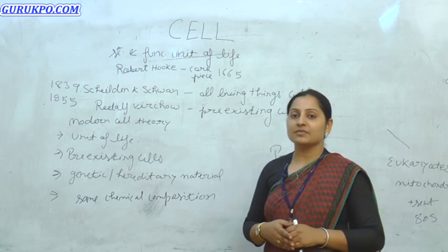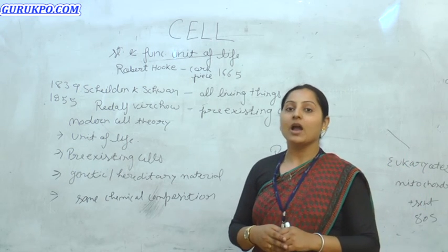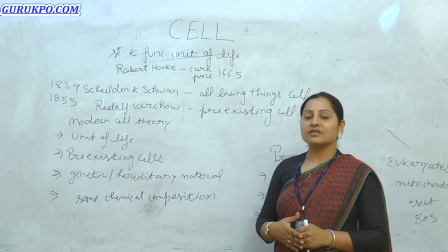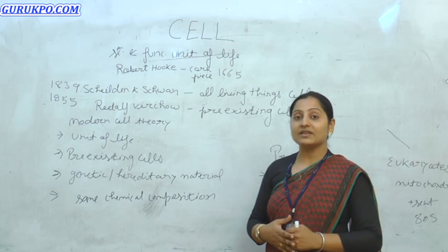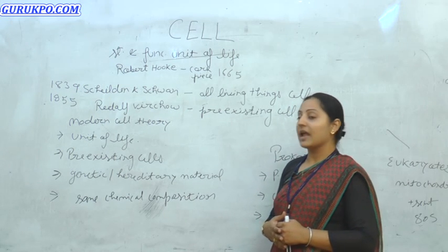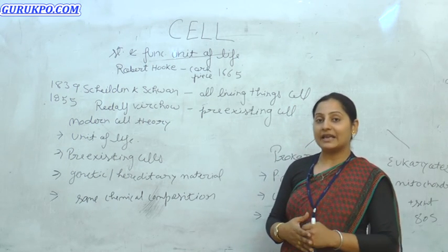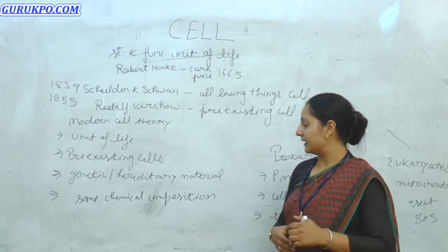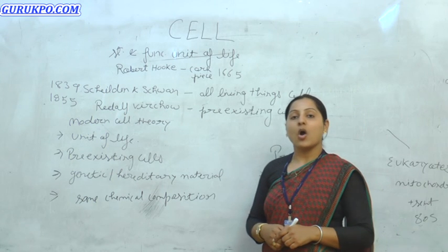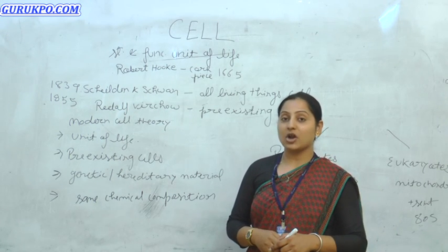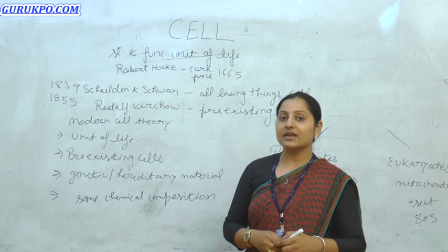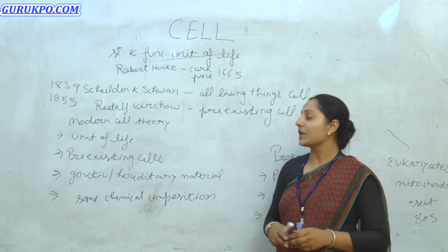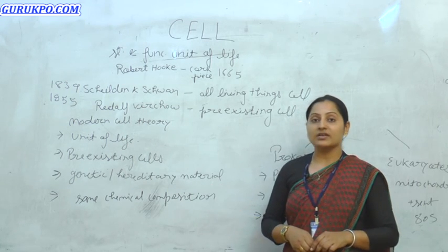Today we have the modern cell theory. According to it: all cells are made from pre-existing cells; all living things are made up of cells; all cells have genetic or hereditary material — either DNA or RNA — which is passed from one cell to another; and all cells have the same chemical composition.